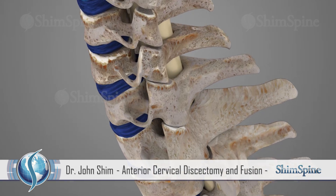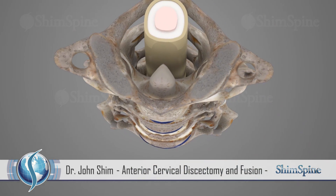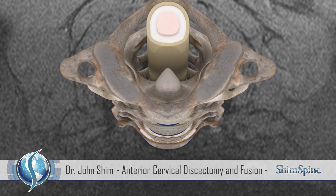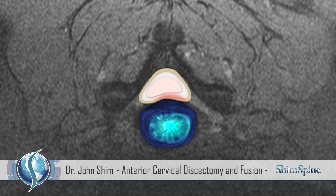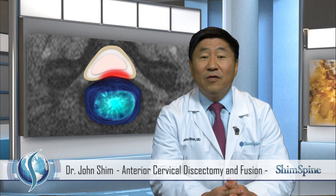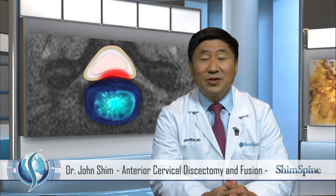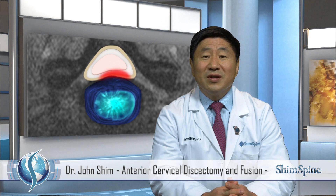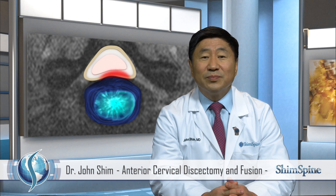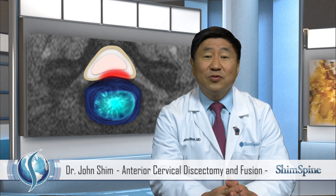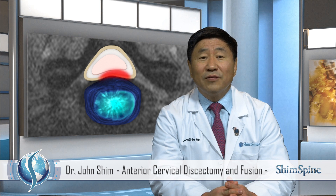On this axial view, or cross-sectional view, you can see the disc material coming out of the outer layers of the disc, or the annulus, and causing pressure on the thecal sac, the spinal nerves, and the spinal cord. For most patients, this will cause radiating pain and numbness in a specific pattern. These numbness and sensation patterns are called dermatomes, and they are often associated with reflex and muscle strength findings.